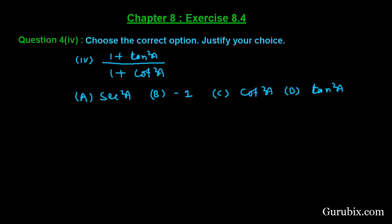Welcome friends, let us solve the fourth part of question number 4 of Exercise 8.4 of Chapter 8. The question says: choose the correct option and justify your choice. We have (1 + tan²A) / (1 + cot²A), and we have to choose from four options: A, B, C, and D.